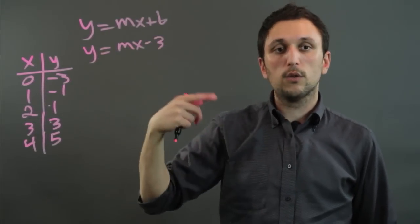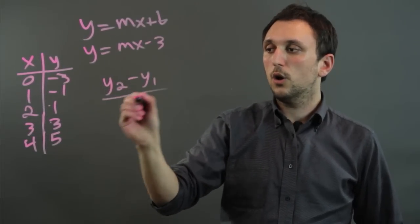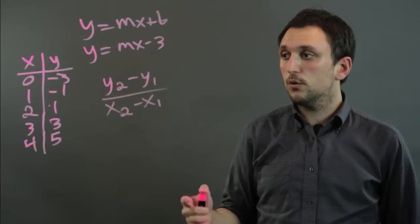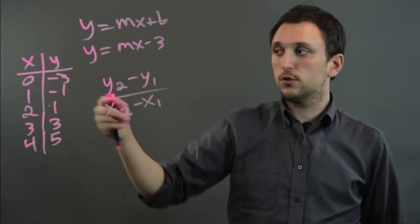Now to find m, we have to do the slope formula. And the slope formula is y2 minus y1 over x2 minus x1. And you can use any two coordinates from the table. For now, we're going to use the first two coordinates.